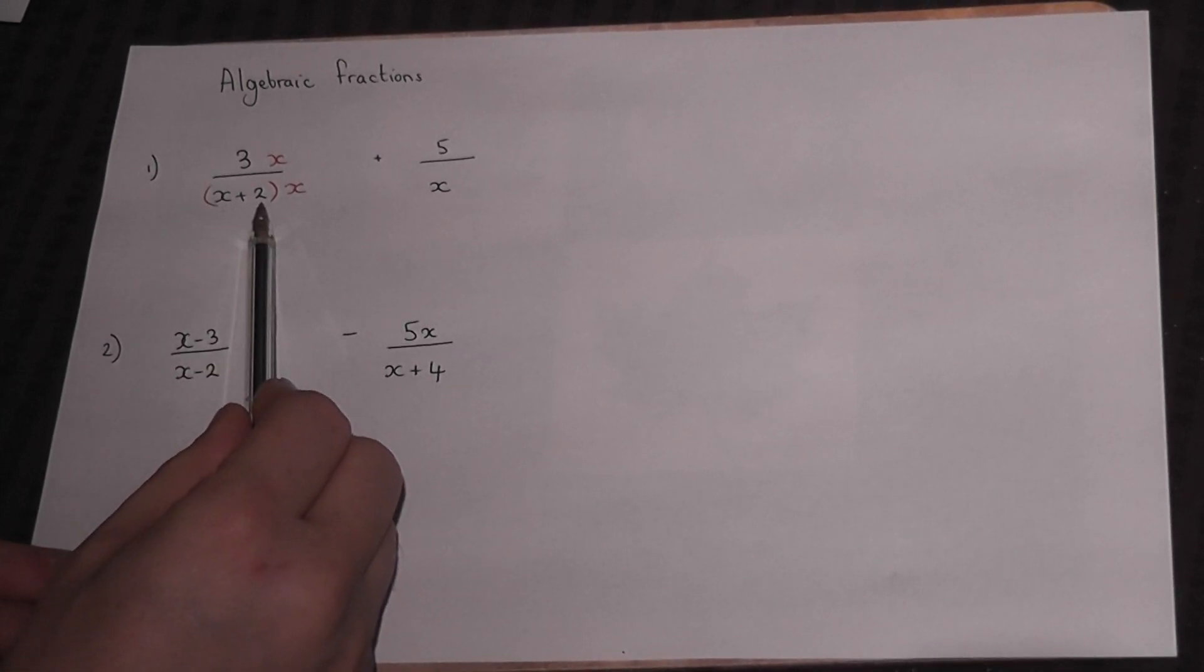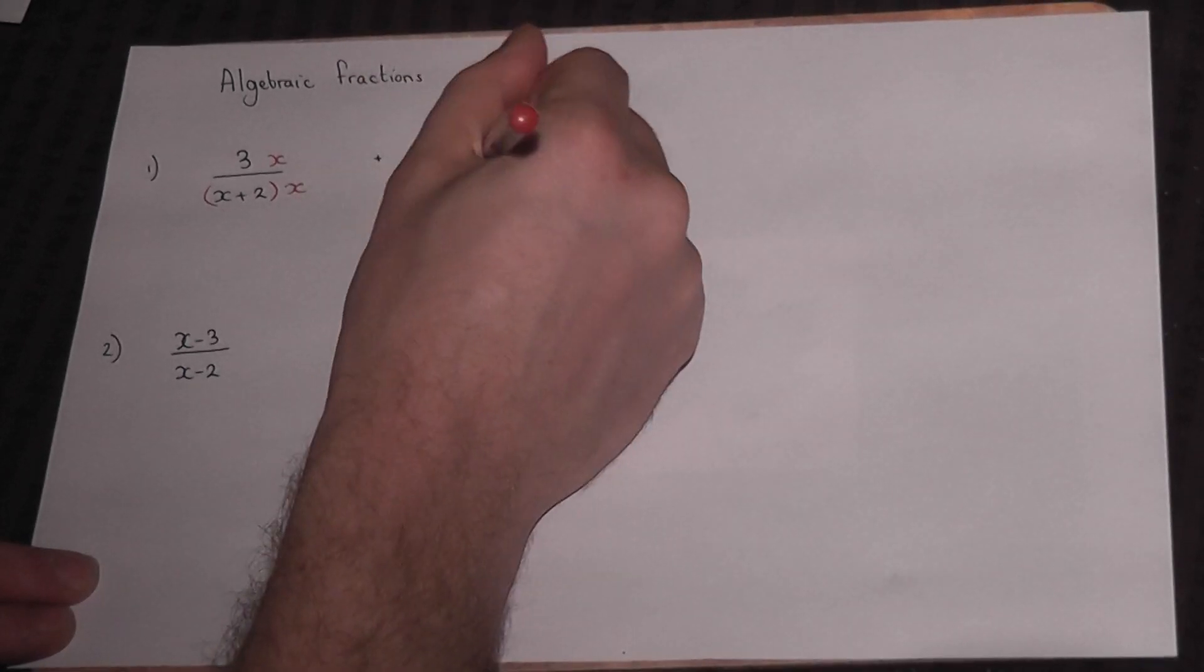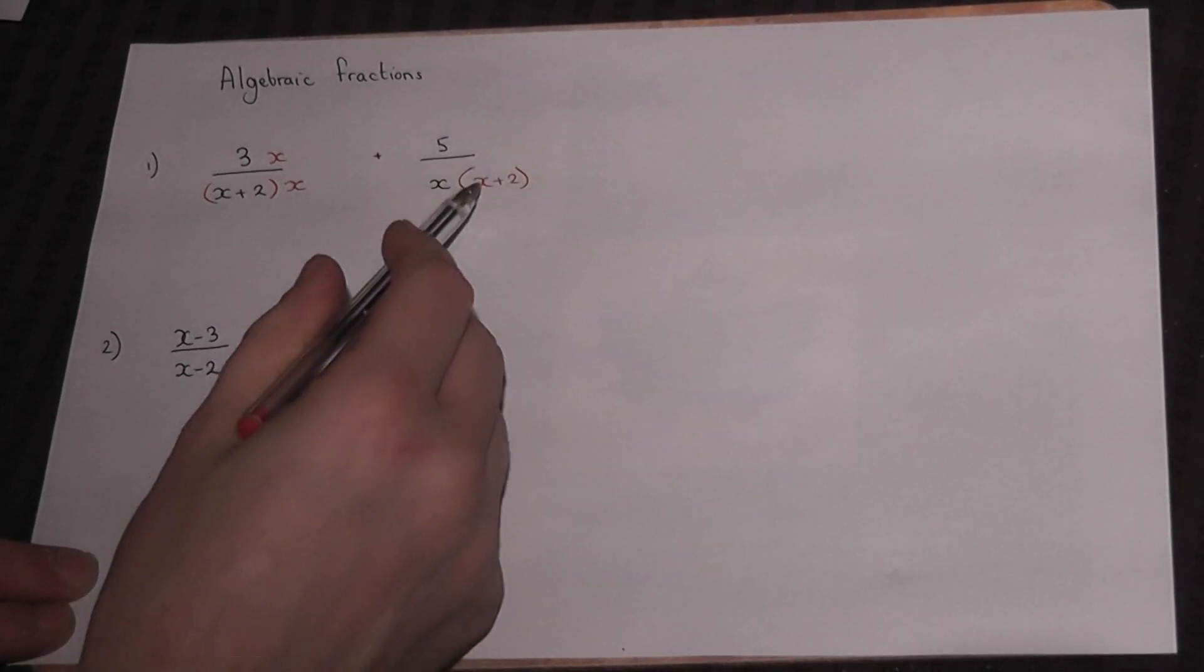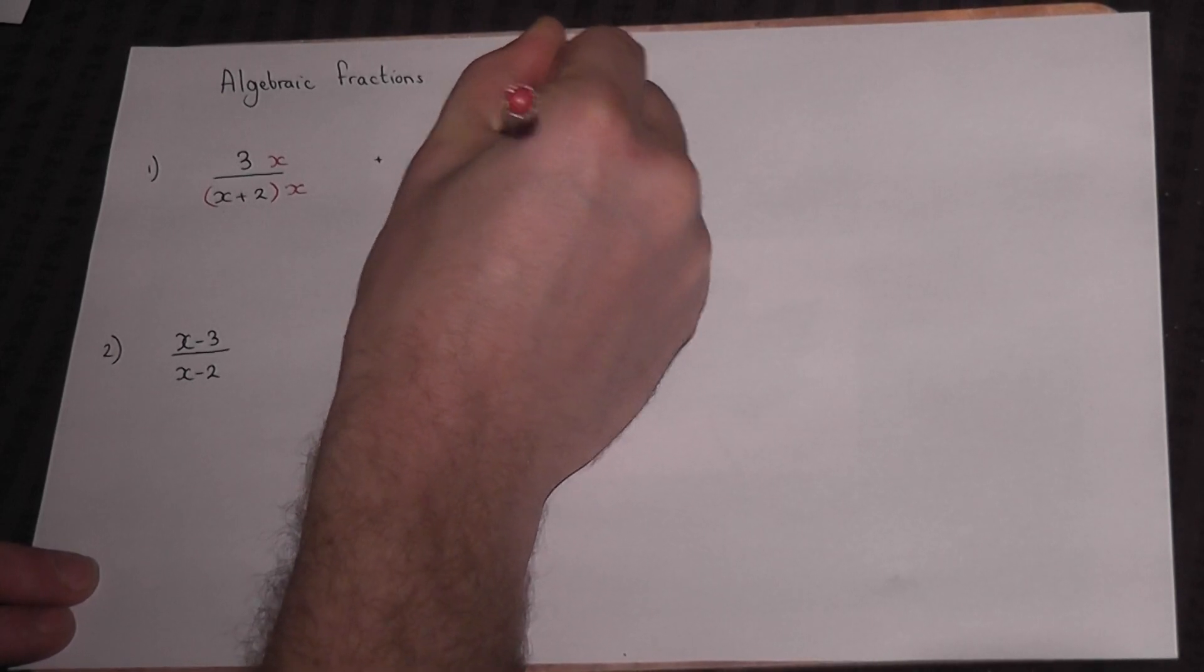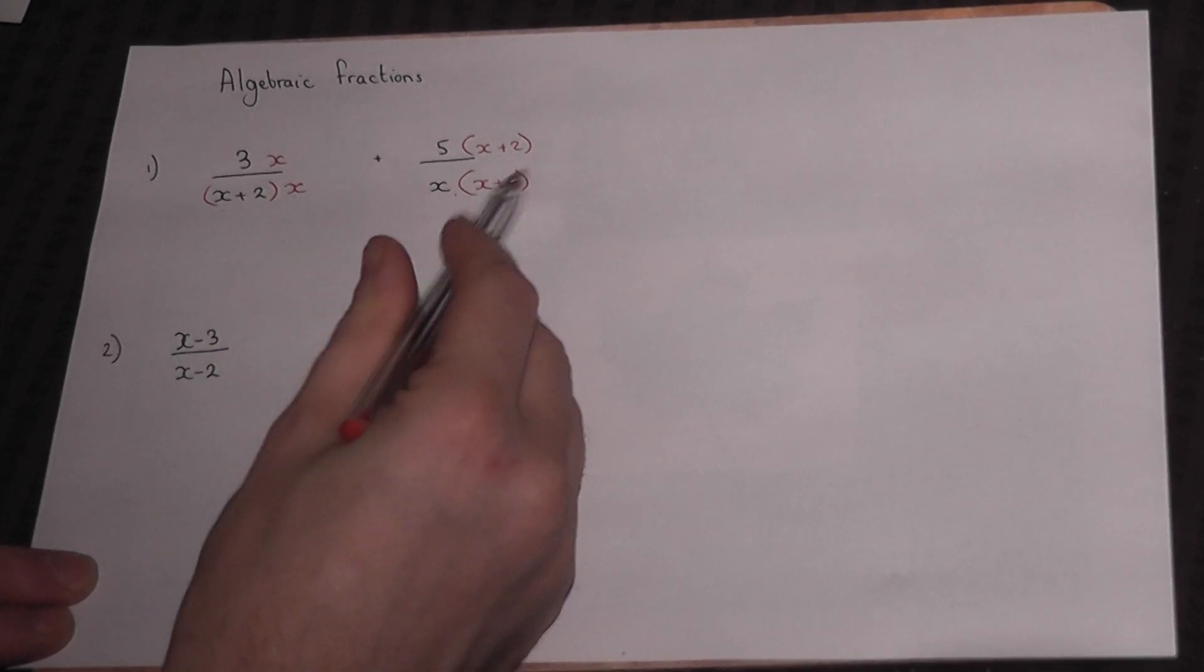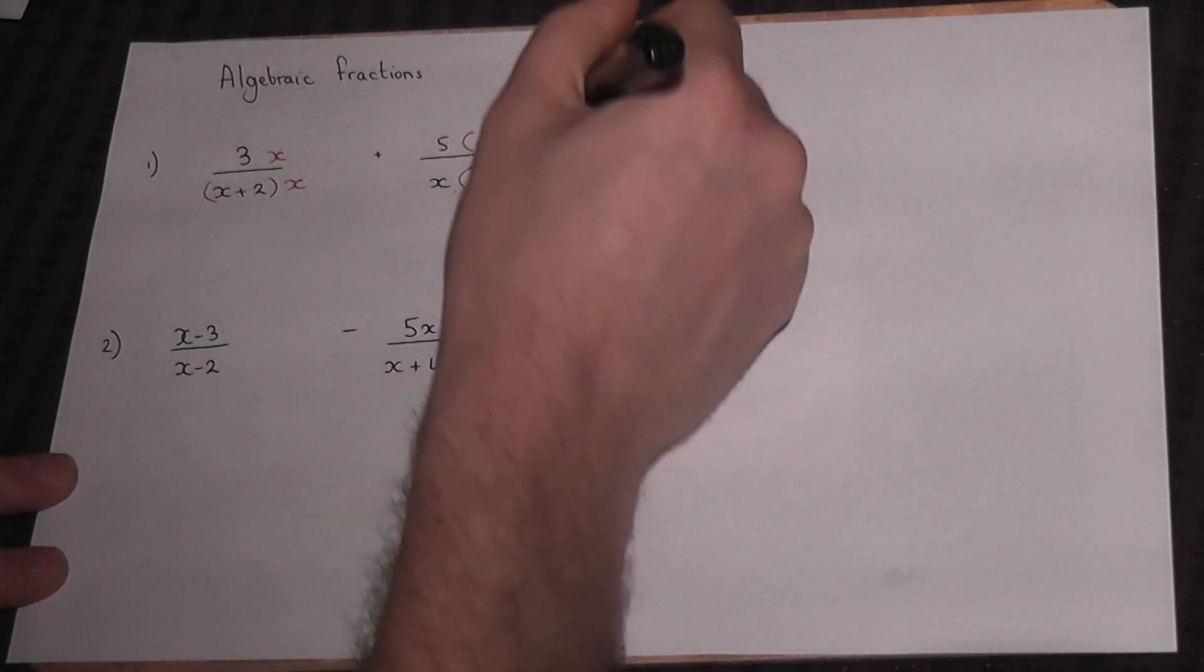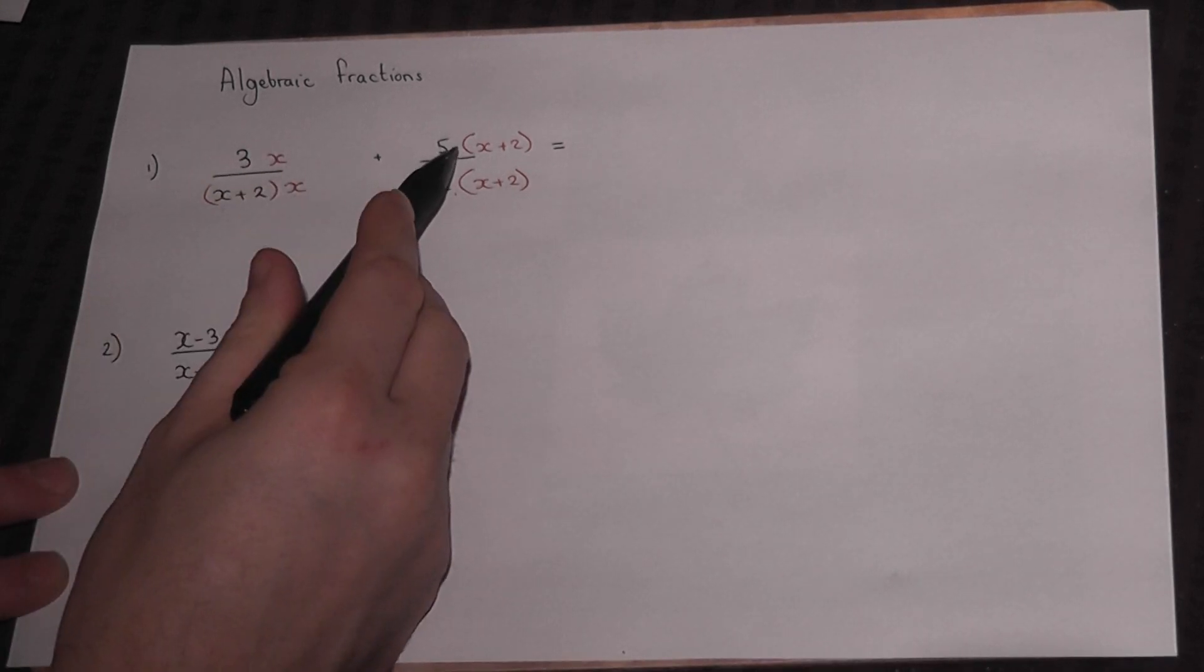We take the other side and force that onto the other fraction, so we put the x+2 onto this side. What we do below we must also do above. Now we've got the same denominator, albeit swapped around. This means we can now add the fractions. Before we do that, we expand the tops but leave the bottoms as they are.